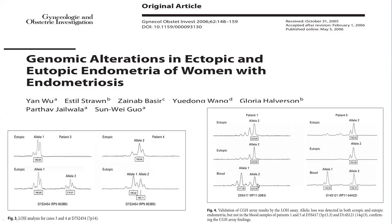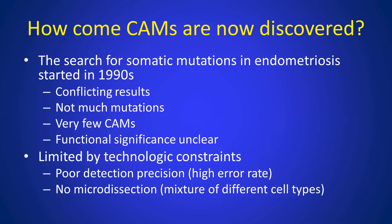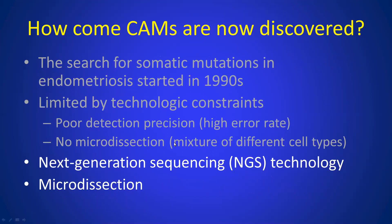In blood, presumably from the germline, there are two alleles. But in endometriotic lesions as well as in eutopic endometrium, one allele is actually lost — referred to as loss of heterozygosity. Early work didn't pan out, simply because there were lots of conflicting results, not many mutations, and very few CAMs. Their functional signals were usually unclear, and results were limited by technological constraints such as poor detection rates and high error rates. They also didn't use microdissection, resulting in a mixture of different cell types and diluted signal-to-noise ratio. CAMs are now discovered because of next-generation sequencing technology and microdissection.